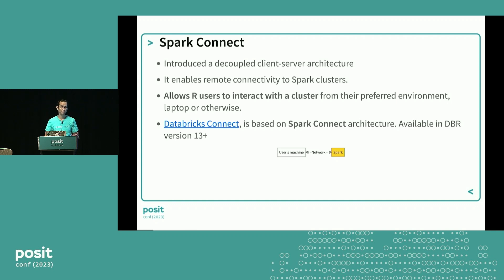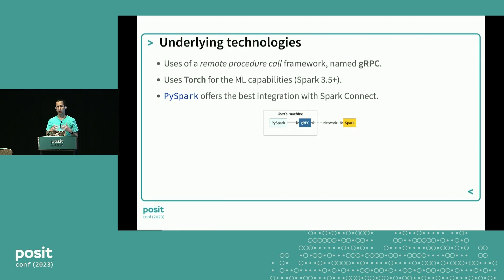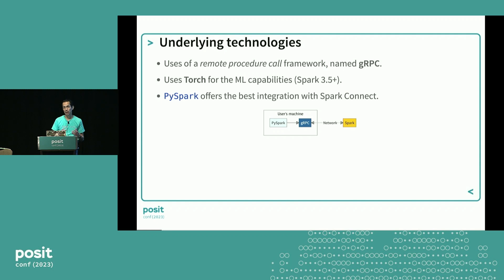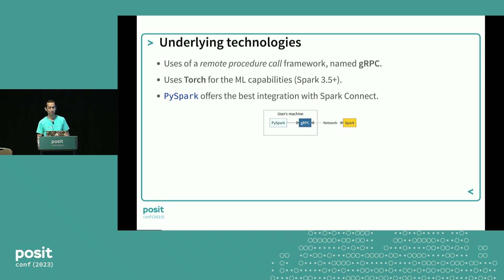Databricks Connect versions 13 and above have Spark Connect — it's based on that, so you'll be able to take advantage of it. Underneath it, instead of using REST APIs like with Livy, Spark Connect uses gRPC as the communication layer. The best way to interact with that gRPC is through PySpark, which uses Python libraries that implement gRPC to talk to Spark. For machine learning, which just came out in 3.5, it will be done through Torch, with one ML model currently implemented.